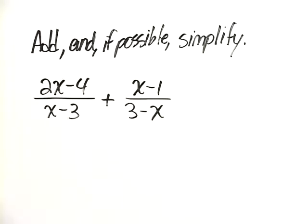Add, and if possible, simplify: 2x minus 4 over x minus 3 plus x minus 1 over 3 minus x.